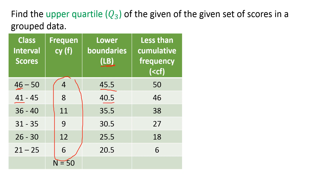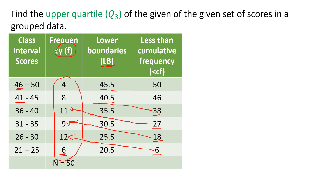For the cumulative frequency, or less-than cumulative frequency, it starts from the lowest class. We have 6, so we copy it. The next value is 18 because we add 6 to 12. Then 18 added to 9 gives us 27. Added to 11 gives us 38. Adding 8 gives us 46. Then adding 4 gives us 50. That is how we get the cumulative frequency data.